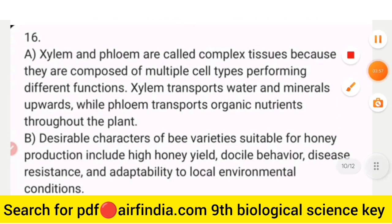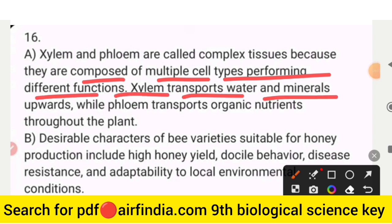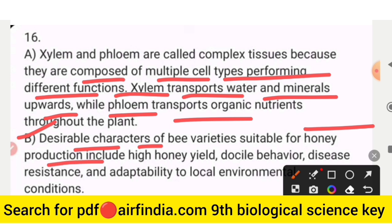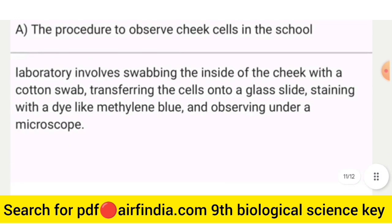Question number 17: xylem and phloem are called complex tissues because they are composed of multiple cell types performing different functions. Xylem transports water and minerals upwards, while phloem transports organic nutrients throughout the plant. Desirable characters of bee varieties suitable for honey production include high honey yield, docile behavior, disease resistance, and adaptability to local environmental conditions.